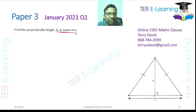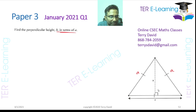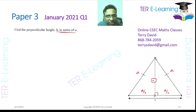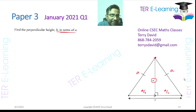They want us to find the perpendicular height h in terms of e. Since the base is e, the perpendicular from the apex bisects the base, so the half-base is e/2. We now have a right-angled triangle with hypotenuse e, one leg h, and the other leg e/2, so we'll use Pythagoras's theorem.